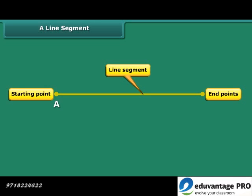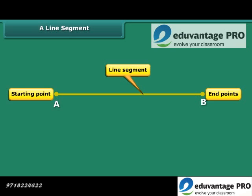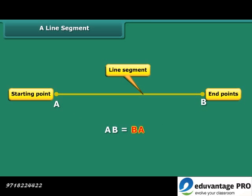A line segment can be named by naming its end points. We can call this line segment AB or BA.